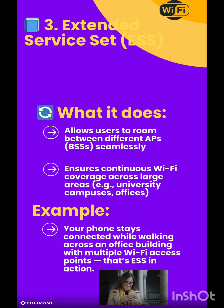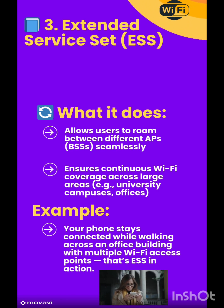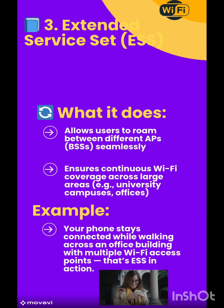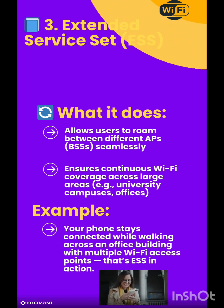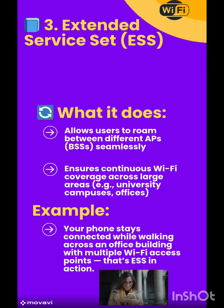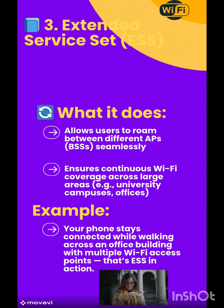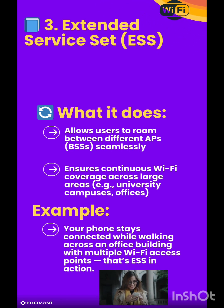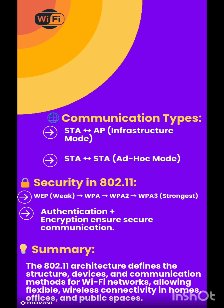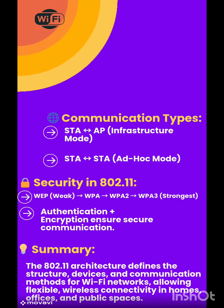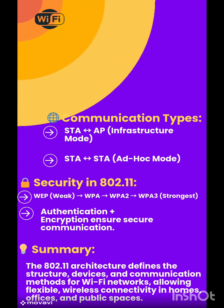Point four: Extended Service Set (ESS). What it does: allows users to roam between different APs and BSSs seamlessly, ensuring continuous Wi-Fi coverage across large areas, e.g., university campuses and offices. For example, your phone stays connected while walking across an office building with multiple Wi-Fi access points — that's ESS in action. Communication types: STA to AP (Infrastructure Mode) and STA to STA (Ad Hoc Mode).